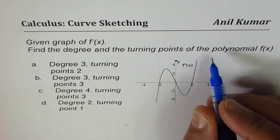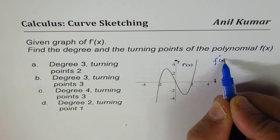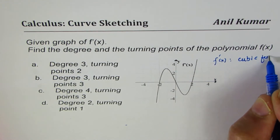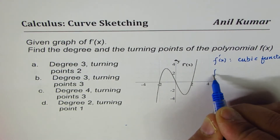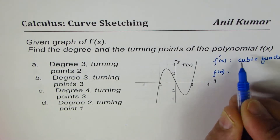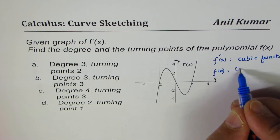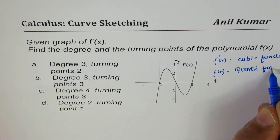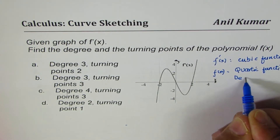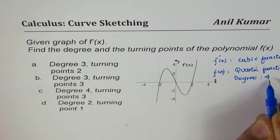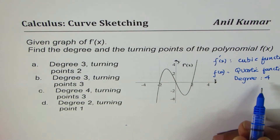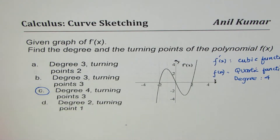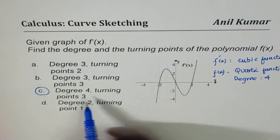The first thing is we are given the derivative, and from this graph we know that this derivative is a cubic function. So what we are given here is the derivative of a polynomial, which is cubic. The function will be one degree higher, so we are expecting a quartic function — degree 4. There is only one choice that gives degree 4, so most probably that is the answer, but let's work on the turning points.